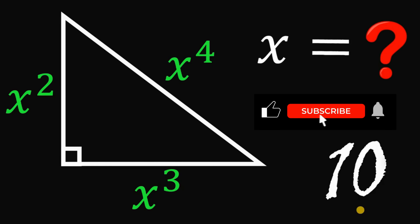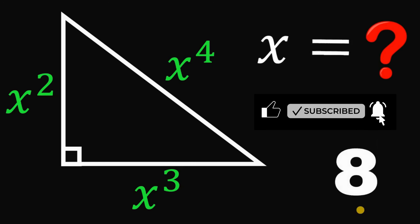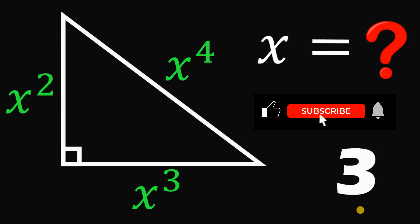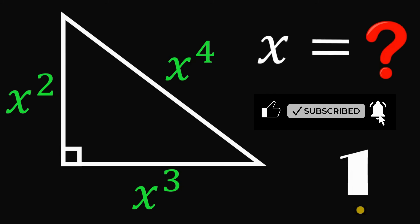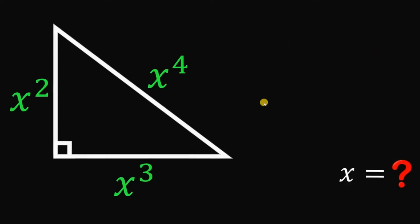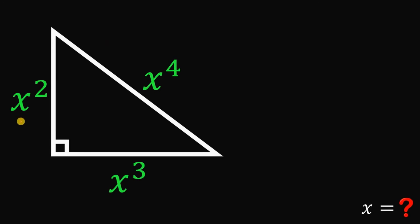You can pause this video if you want to give this problem a try. Let's answer this question together. Given this right triangle with sides x squared, x cubed, and x raised to the fourth power, our goal is to solve for the value of x — the real value of x. So x must be a real number.